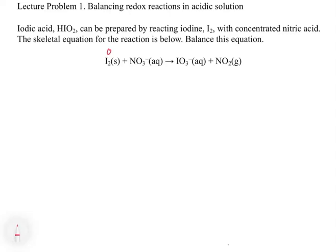For NO3 minus, oxygen is -2 and we have three of them, giving us -6. We have an overall minus charge, so nitrogen gets a +5 oxidation state. If you don't remember how to do this, you need to go back to Chapter 4 and look at the rules for assigning oxidation numbers.